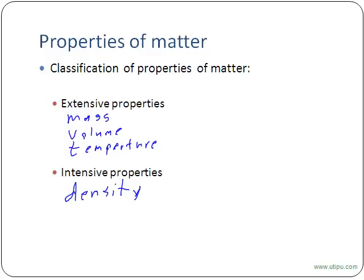Similarly, if I have a bucket of red paint, color is another intensive property. If I take that bucket of paint and pour out half of it, the part that remains will have a different mass and a different volume — those are extensive properties. But will it change its color? No, the color is going to be exactly the same. That's an example of an intensive property. Density is one, color is another.